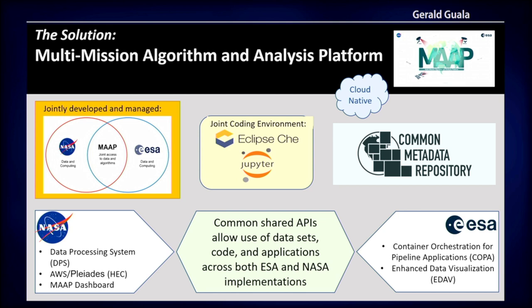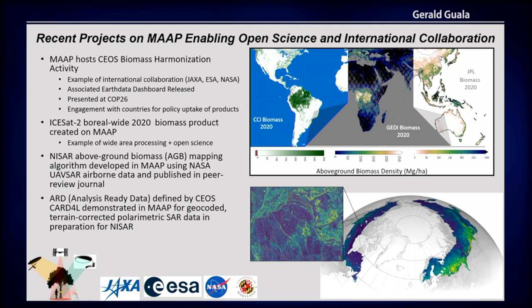Everything in MAP is standardized and common, so everyone — wherever you're sitting, Europe, U.S., anywhere — it works. We have individual things being built alongside MAP. Europe has a container orchestration pipeline called COPA, which is quite useful, and they have a really good visualization platform, EDAV. On the NASA side, we've got the data processing system where you can spin up a supercomputer in the cloud, and we also have a pipeline to an actual supercomputer called Pleiades. We also have the MAP dashboard so users can communicate results out of MAP directly.